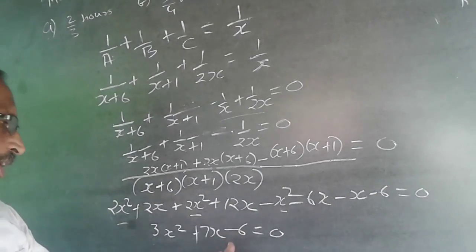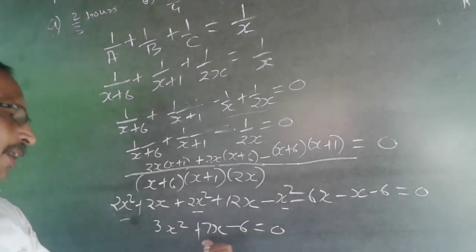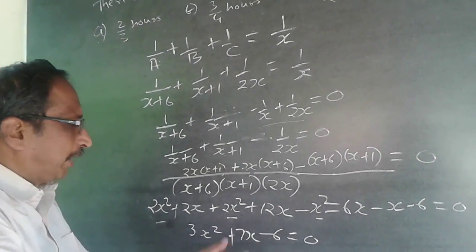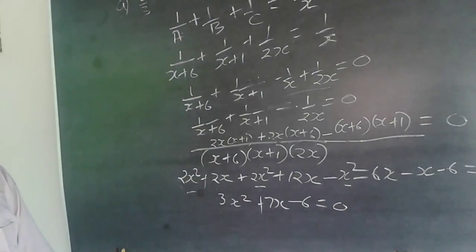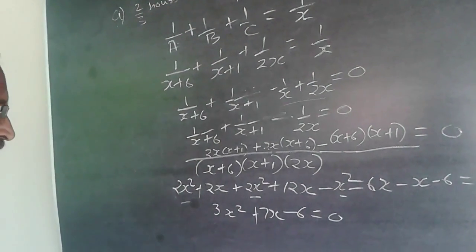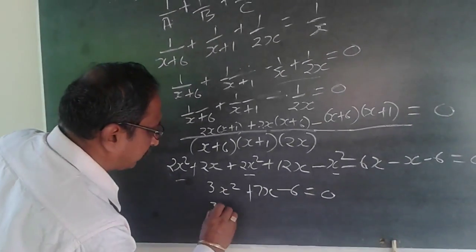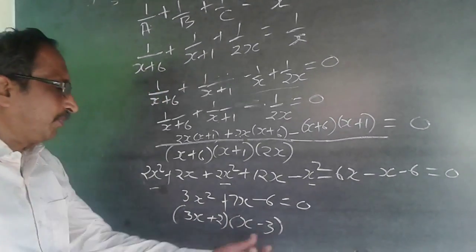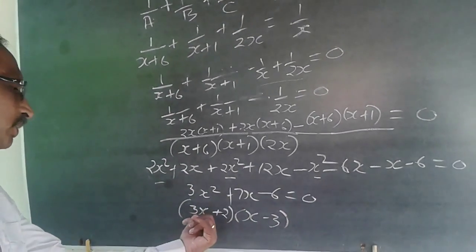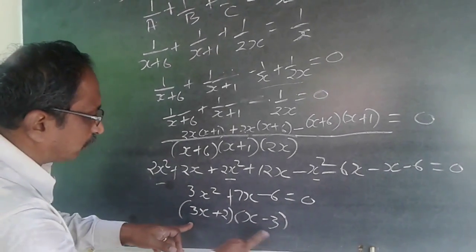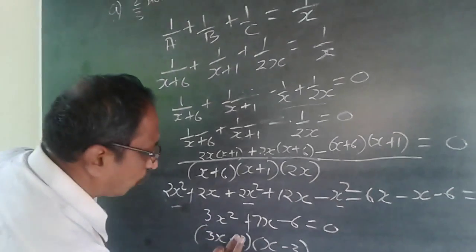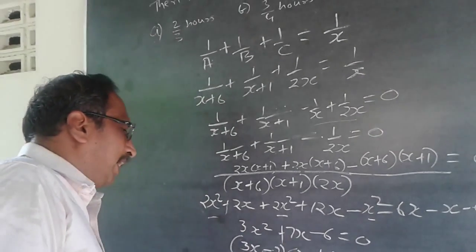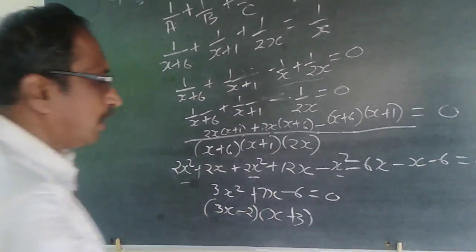Now split the middle term. We need factors of 3 times 6 equals 18 that add up to 7. Using 9 and 2: this gives (3x minus 2)(x + 3) = 0. Splitting: minus 9x plus 2x gives plus 7x, which confirms the factorization. So 3x² minus 9x + 2x minus 6 = 0, factored as (3x + 2)(x minus 3) = 0.